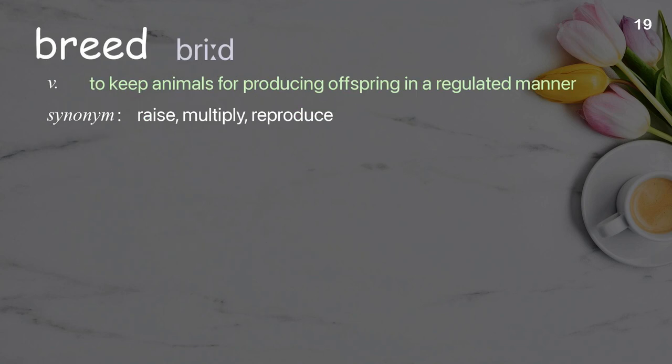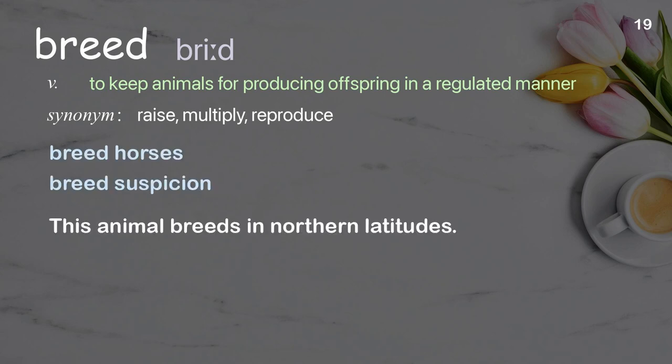Breed: to keep animals for producing offspring in a regulated manner. Examples: breed horses, breed suspicion. This animal breeds in northern latitudes.